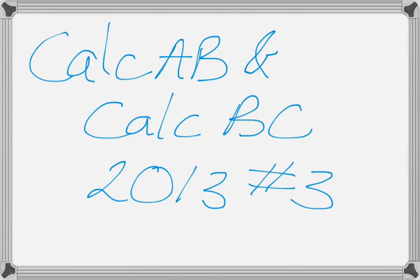It's one of those problems where you're given a table and asked a bunch of stuff about it. Pretty much the first part of every one of these problems is to approximate the derivative at some point. So we're going to approximate C prime of 3.5.